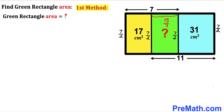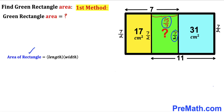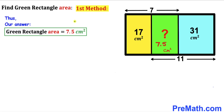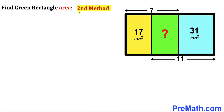Here's our final step: calculate the area of the green shaded rectangle. Using the area formula with dimensions 15/7 and 7/2, we get 15/7 × 7/2. Simplifying the right-hand side gives 15/2, which equals 7.5 cm². So the area of the green rectangle is 7.5 cm² by the first method.